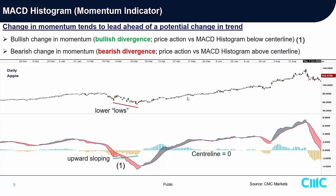Similarly, the converse is the bearish divergence — a bearish change in momentum. Take a look at the price action of Apple: higher highs, an uptrend. But correspondingly, the MACD histogram is downward sloping, meaning it's a leading indication that the speed of moving up is losing momentum. That means there's a high chance this uptrend doesn't have enough strength to push higher, and the trend may start to reverse — either sideways or downtrend.